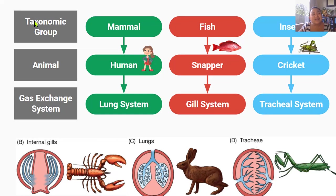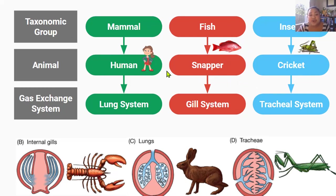Why do different animals have different adaptations if they're all after the same thing? The answer is that these different animals have different ecological niches, which means gas exchange systems have evolved different adaptations to survive and thrive in their particular niche. For example, humans have very different niches to the snapper and the cricket, and so our lung system will have very different adaptations to the gill system or the tracheal system.